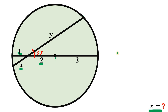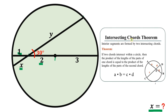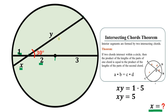What we're going to do is use one theorem, and that is the intersecting chords theorem. It says: if two chords intersect within a circle, then the product of the lengths of the parts of one chord is equal to the product of the lengths of the parts of the other chord. In this figure, A times B equals C times D. With respect to our figure, X times Y is equivalent to 1 times (2 plus 3), or 5. It follows that X times Y is simply equivalent to 5.